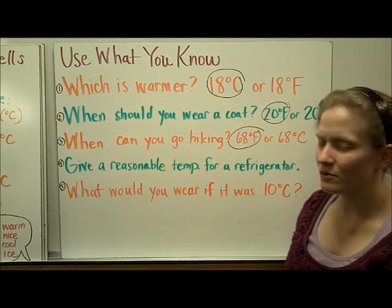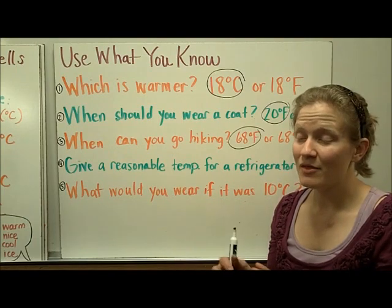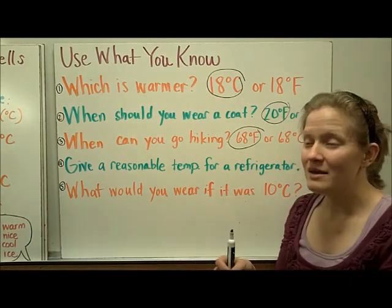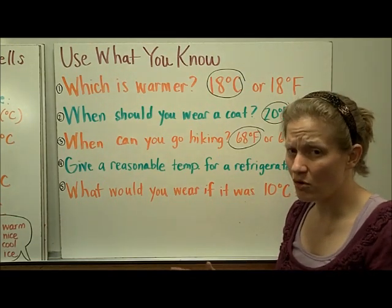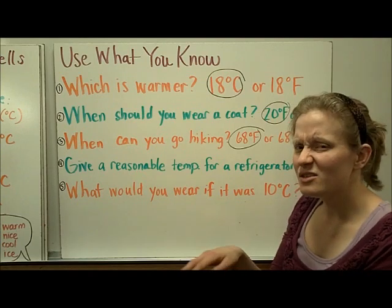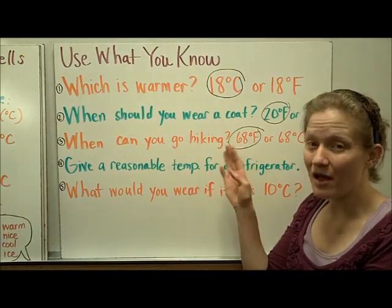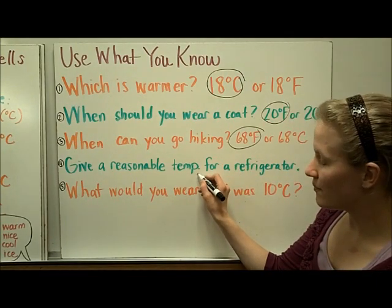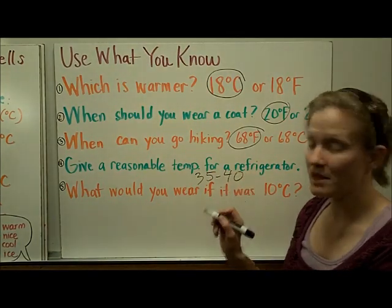And then four, give a reasonable temperature for a refrigerator. Well, I don't know about you, but every once in a while, the things in my refrigerator freeze. If they're in the way back, sometimes things will get a little bit icy. So I know that 32 degrees is too cold because I don't want things to freeze. So a refrigerator should be just a little bit above freezing. So an appropriate temperature for a refrigerator is somewhere around 35 to 40 degrees Fahrenheit.